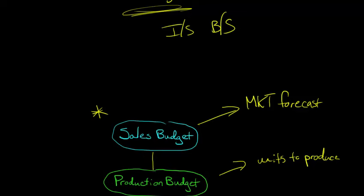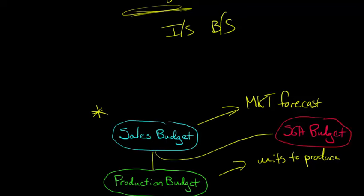There's another budget that we need the sales budget to make, and that is called the SG&A budget — the selling, general, and administrative expense budget. That is going to be based off of the sales budget. You might be thinking: SG&A includes things like the CEO's salary — do we really need the sales budget to compute that? Well, the SG&A also has selling expense, and a lot of that is based on the number of units. For example, sales commissions paid to salespeople are based on units sold. So the sales budget allows us to do both the production budget and the SG&A budget.